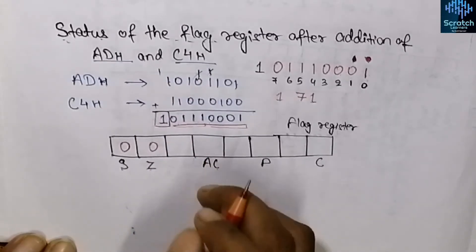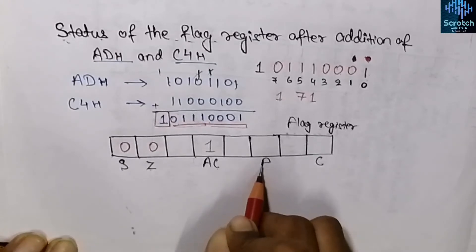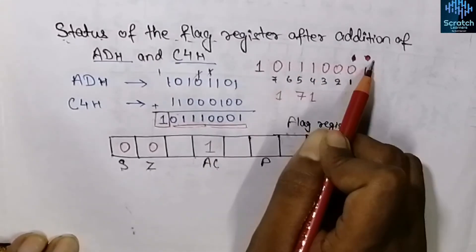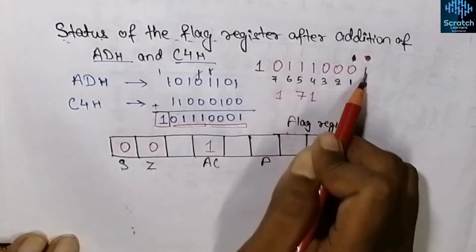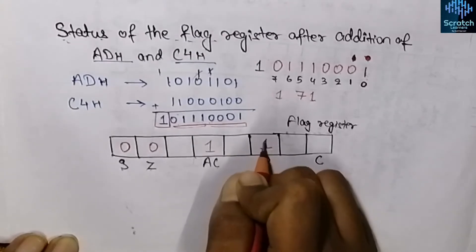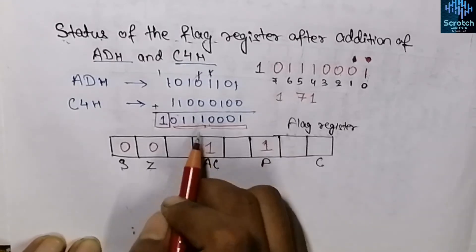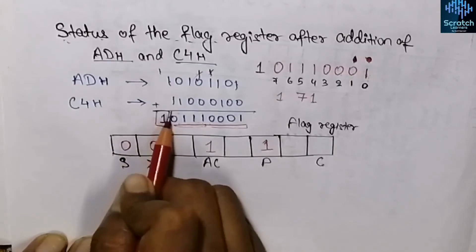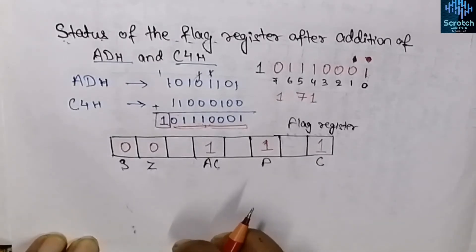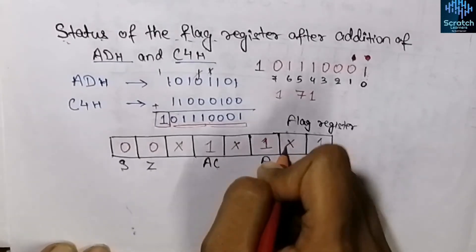The auxiliary carry flag is set to 1 as a carry shifted from D3 to D4. For the parity flag in even parity mode: counting the number of ones in the result gives four ones, which is even, so we store 1 in the parity flag. For the carry flag: a carry of 1 was generated from the result, so we store 1 in the carry flag. The three don't care bits are marked with crosses.